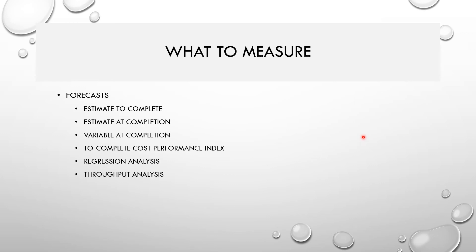Forecast-related metrics help you predict future performance. Estimate to Complete is the additional budget needed to finish the project, calculated by comparing actual cost against budgeted cost using the Cost Performance Index or Schedule Performance Index. Estimate at Completion is the total budget the project is projected to require — you take the actual cost and add the new estimated additional budget to arrive at this figure.